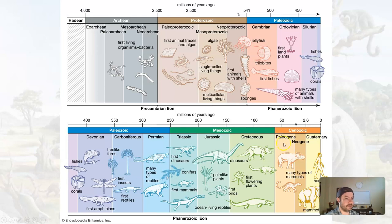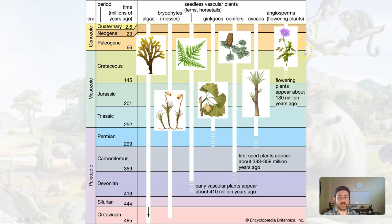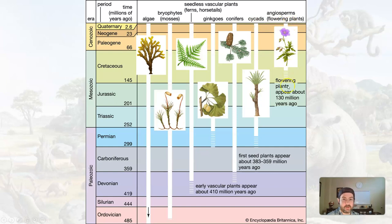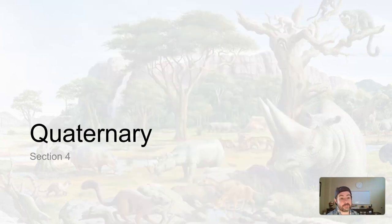That brings us to the end of the Neogene. Plants are pretty much well in place — grasses, trees, modern — what we think of as modern day. That's going to bring us to the Quaternary period, which is just the most recent small slim little slice of Earth and life history. So let's pause here and I'll see you back here in just a second.